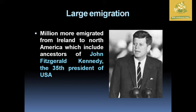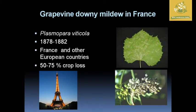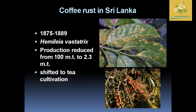Among those emigrants were the ancestors of John F. Kennedy, the 35th President of the USA. Next is the grapevine downy mildew in France, caused by Plasmopara viticola during 1878 to 1882. This disease affected France and other European countries and caused around 50 to 75 percent loss in grapevine crop yield.